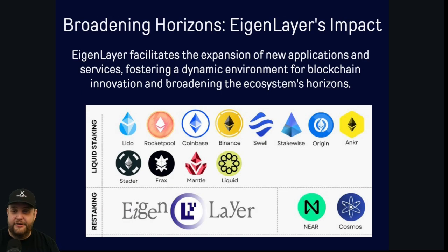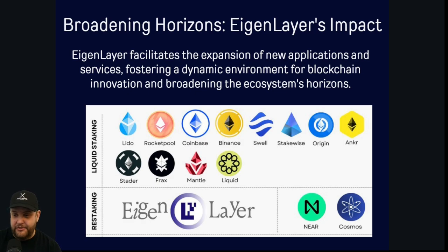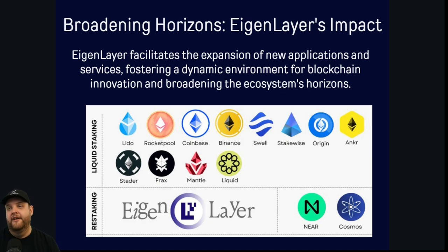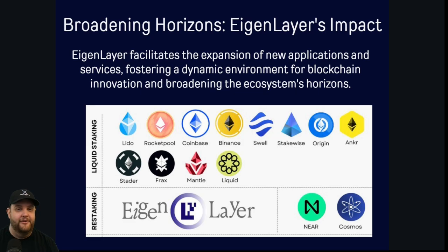There are quite a few different liquid staking and restaking protocols — Lido, Rocketpool, Coinbase, Binance — all with their own liquid staking derivatives. We also have things like Frax (a stablecoin), Mantle, Liquid, Anchor Protocol, and Origin Protocol. Other layer ones that operate on the Eigenlayer include Near Protocol and Cosmos Atom. Eigenlayer facilitates the expansion of new applications and services, fostering a dynamic environment of blockchain innovation by broadening the ecosystem's horizons and leveraging Ethereum security to keep layer twos safe and secure.